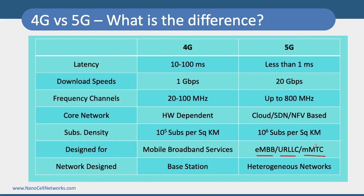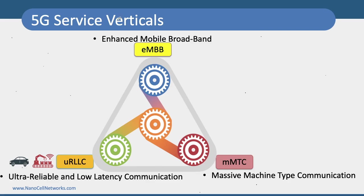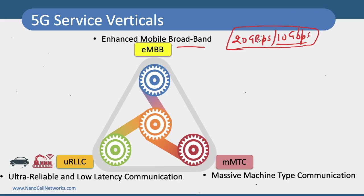In the next slide we talk about what kind of services we are expecting. In the case of Enhanced Mobile Broadband (eMBB), our expectations are 20 Gbps data rate in downlink and 10 Gbps in uplink. These are the peak data rates, but at least for every user experience data rate we are expecting up to 100 Mbps.